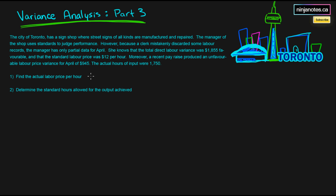The actual hours of input were 17.50 hours. We need to find the actual labor price per hour — that's what we're solving for first. And second, we need to determine the standard hours allowed for the output achieved, which is the standard quantity. Let's go about analyzing this question.